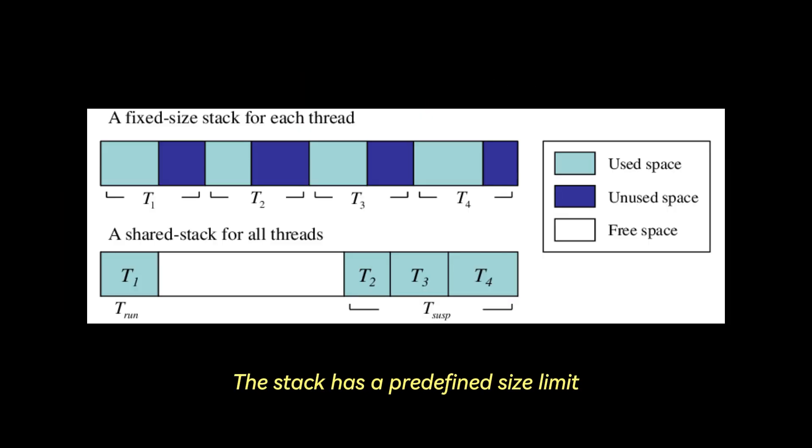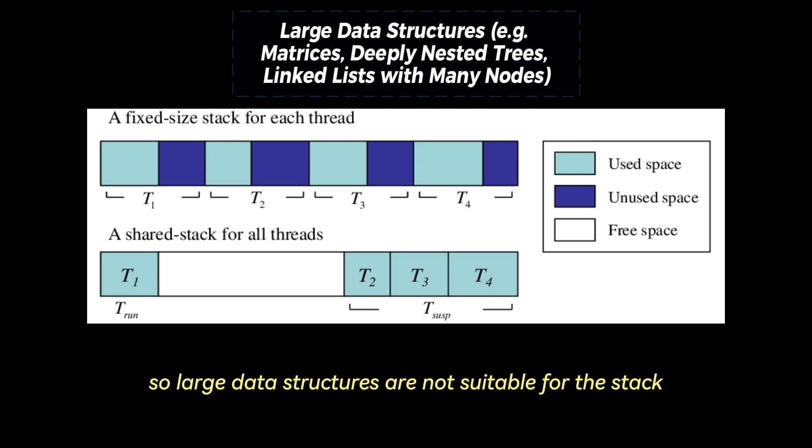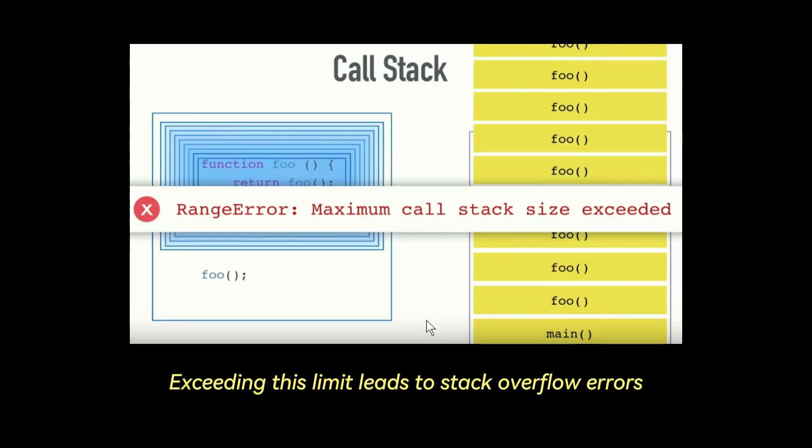The stack has a predefined size limit, often around 1MB for each thread, so large data structures are not suitable for the stack. Exceeding this limit leads to stack overflow errors.